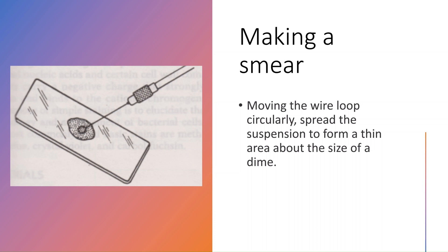We have to process and liquefy the sample first. Then we place a small amount at the center of a clean glass slide and spread it by moving the wire loop in a circular motion so that the smear is about the size of a dime. After making the smear, you must fix it — otherwise it will wash away during staining. You can do air fixation by letting the slide dry, or heat fixation by passing the slide through a Bunsen flame two or three times.